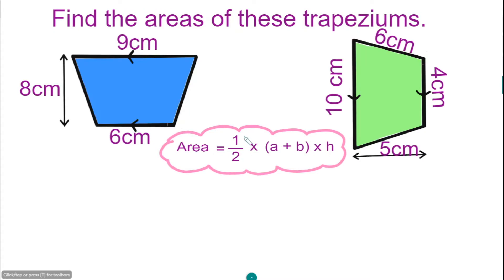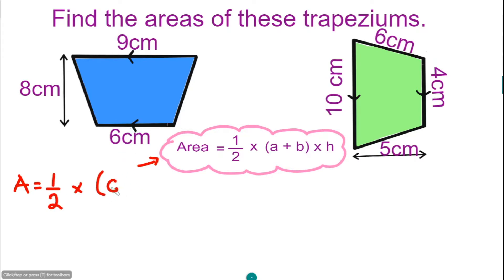Let's move on to the next question. We've got two trapeziums here. For the blue trapezium, the first one has been flipped upside down. If you re-flip it, the top is going to be 6 and the bottom is 9, and the vertical height between them is 8 cm. Using the formula, the area is going to be a half, multiply the sum 6 plus 9, then multiply by the vertical height which is 8.